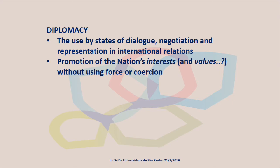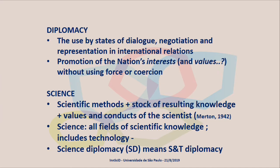Then, science. What is science? I like the very classical definition of the sociologist Robert Merton in the 1940s. Science is a sum of three different things: scientific methods — the so-called scientific approach to understand facts, nature or social facts; then the result of these investigations, knowledge, new knowledge, scientific knowledge; and also the values, the conducts, the behaviors of scientists and science. Robert Merton said science is all this altogether.